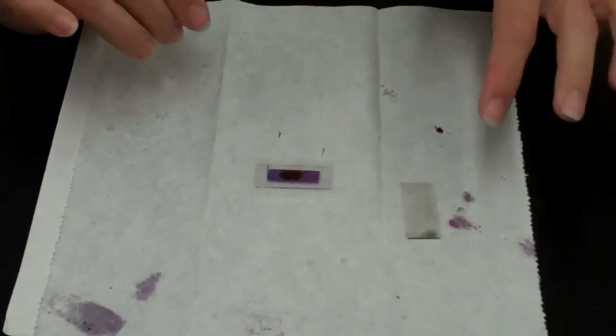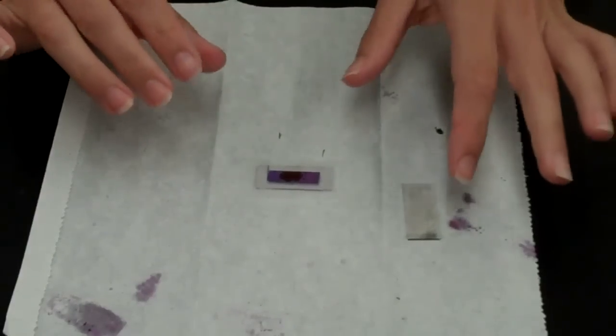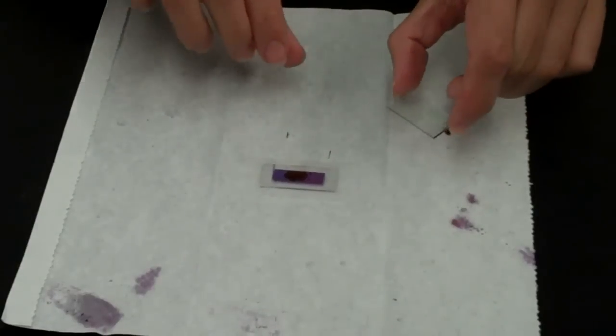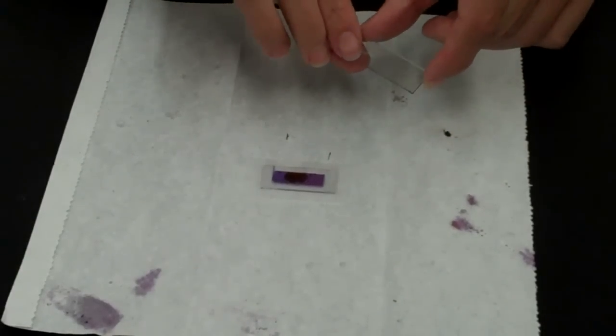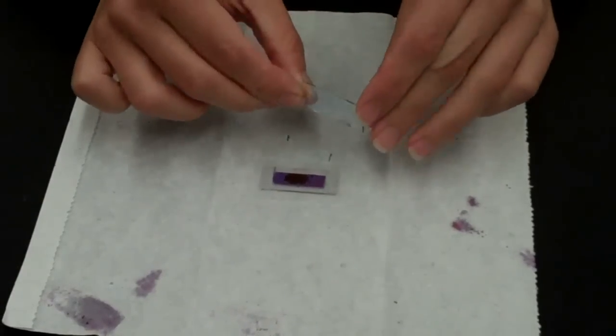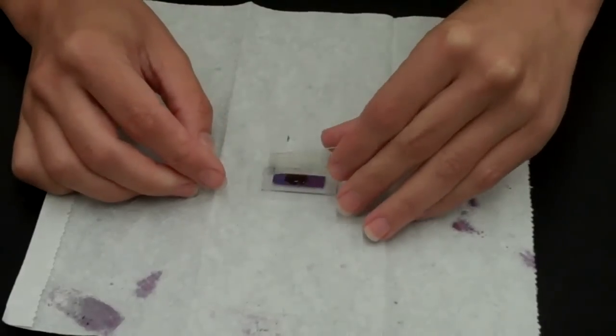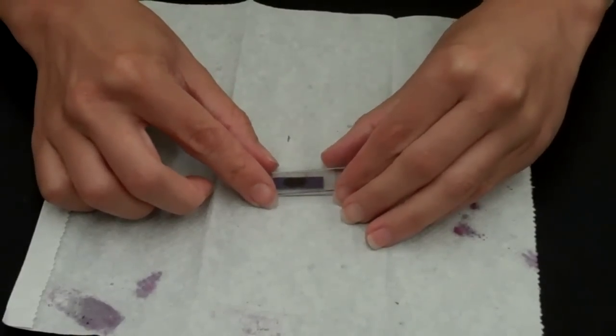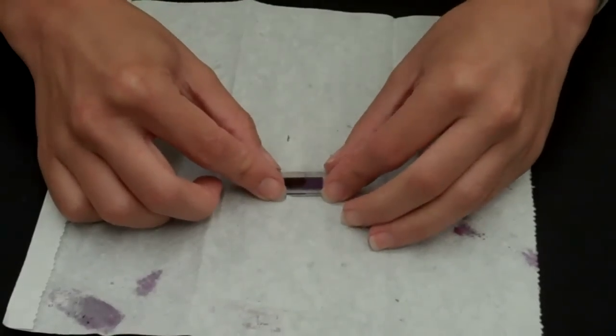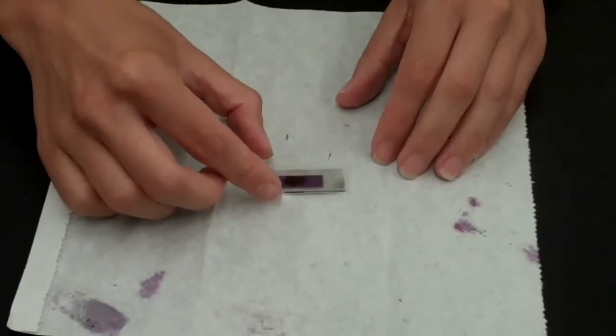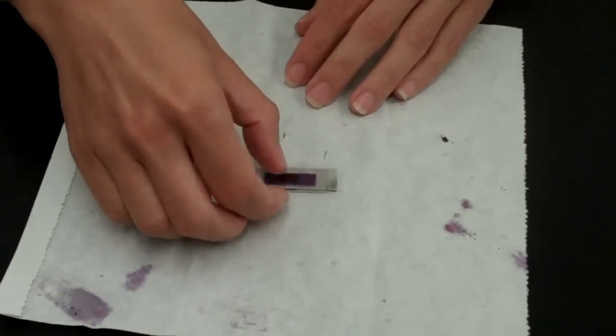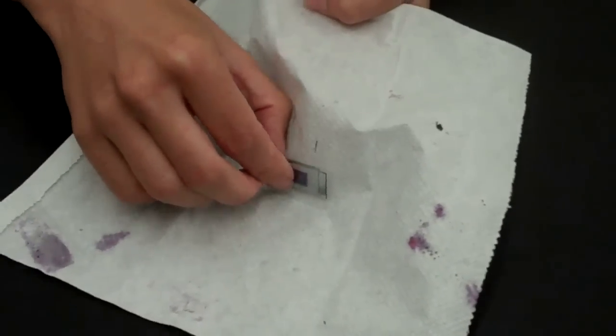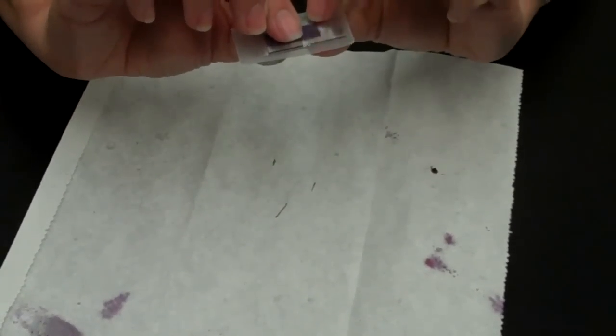At this point, you're now ready to assemble the solar cell. You will pick up the transparent indium tin oxide coated slide with the carbon coating and put it face down onto the titanium dioxide dyed slide. And at this point, the easiest way to remove it from the paper towel is to slide your hand under the paper towel and pick it up like that.